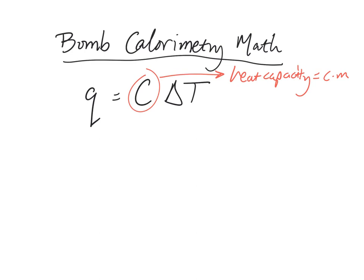So the bomb calorimeter, because it's made of many parts, not just one part like a styrofoam cup, has a lot of different parts. And if we add all of those parts' c and m values together, we get one large value that we label capital C. And that capital C will function as C of the bomb calorimeter in total, rather than having to worry about all the separate parts.